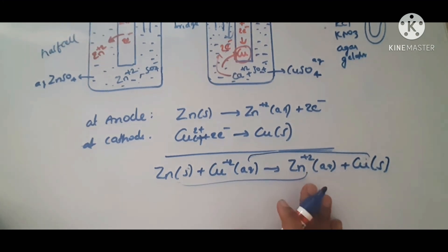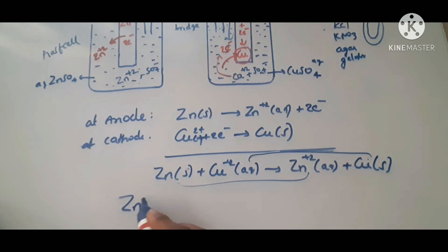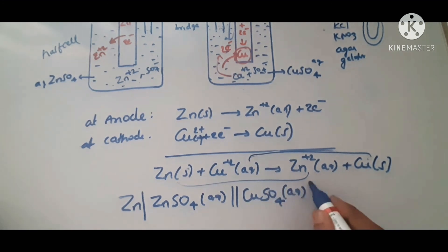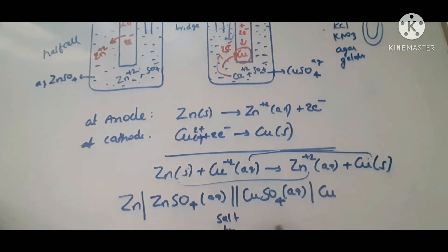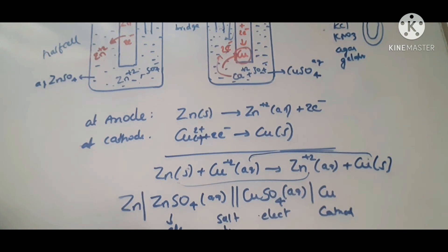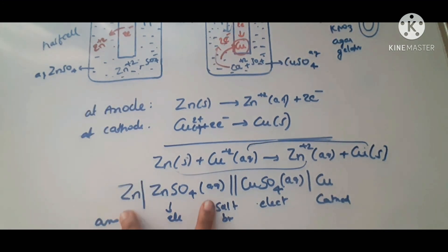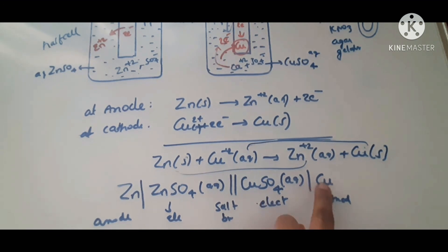The representation of the Daniel cell: the zinc half cell and copper half cell are combined using a salt bridge. The cell notation is written as: Zn | ZnSO₄(aq) ‖ CuSO₄(aq) | Cu. A single vertical line represents a phase boundary (electrode-electrolyte), and the double vertical line represents the salt bridge. The anode is on the left and the cathode is on the right.